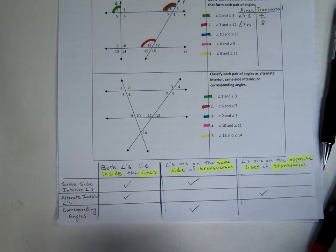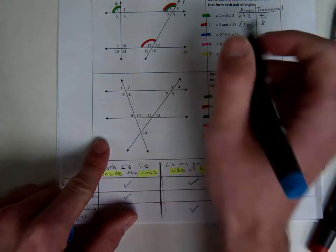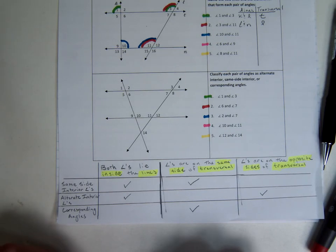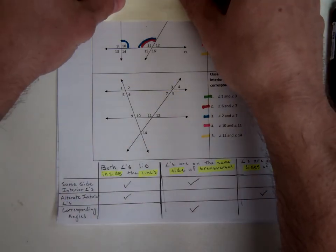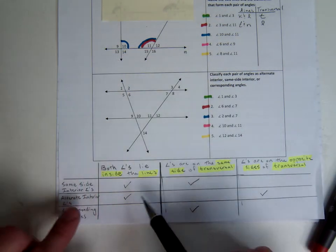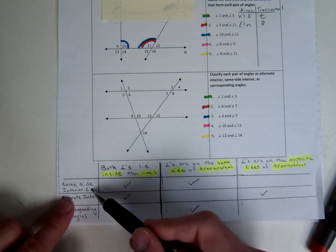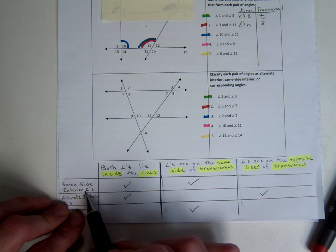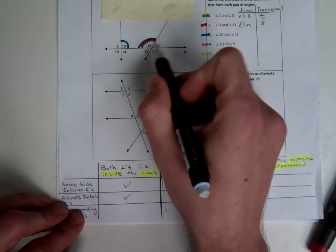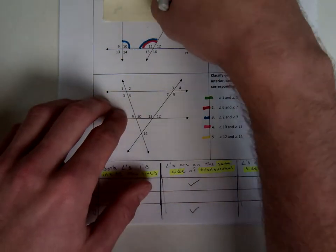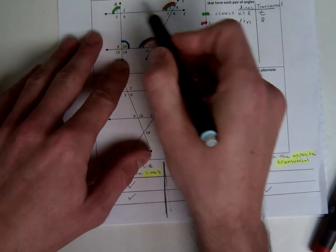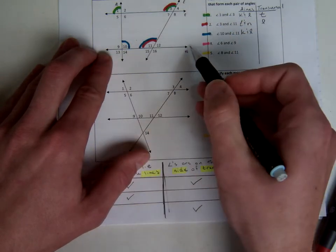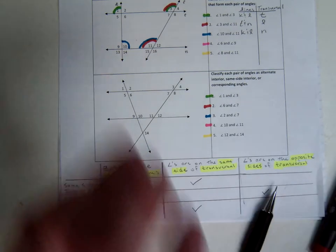For the blue line we have angles 10 and 11. Take a second and try to decide which line we will not be using — hopefully you'd see that line T has nothing to do with these two blue angles. Looking at the angles, they're both inside the lines, so we're looking at same side or alternate interior angles. They're on the same side, so these are same side interior angles. The two lines being used are K and L, and the transversal cutting through both is line N.